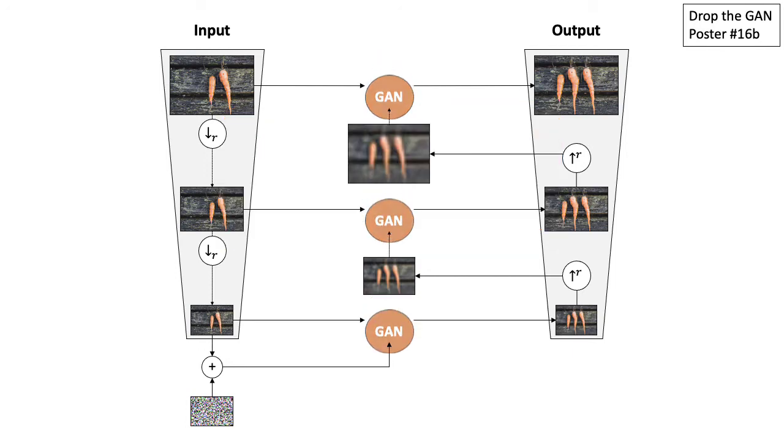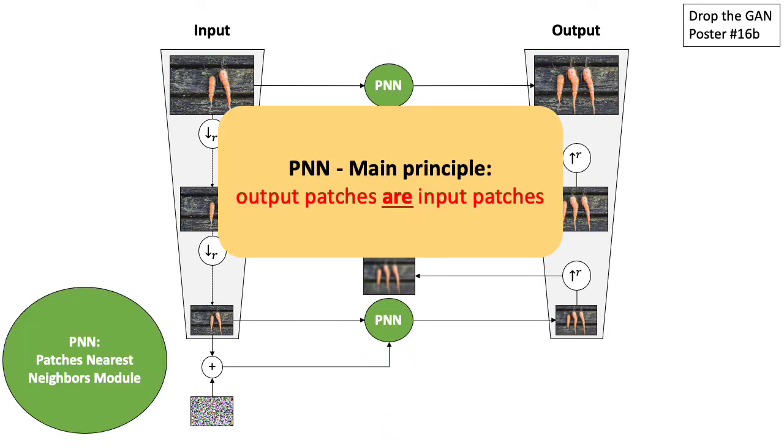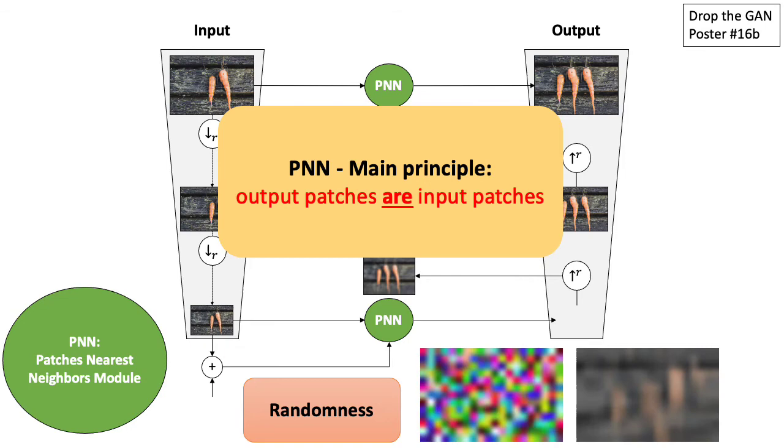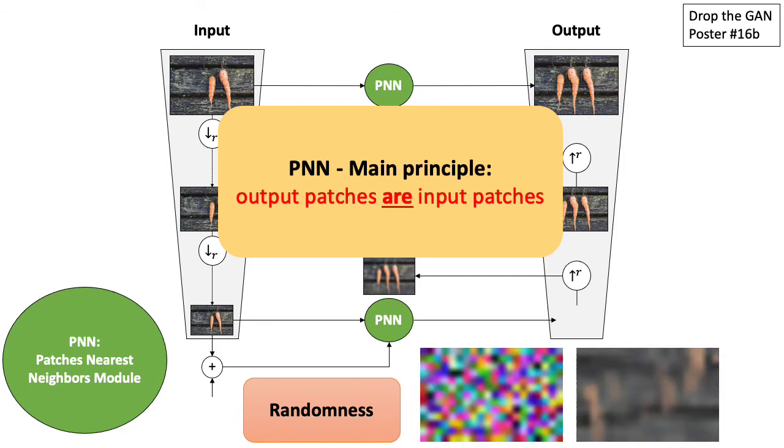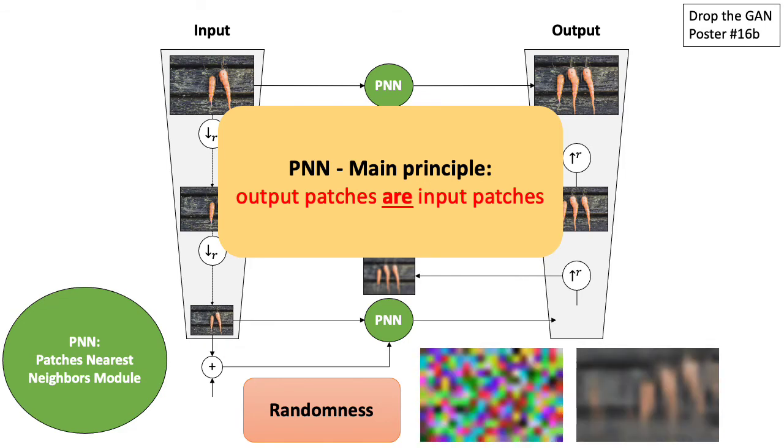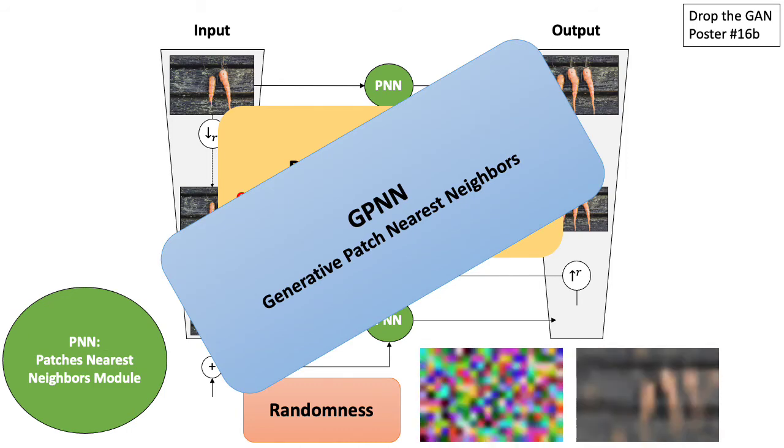But what if we drop the GAN and replace it with a simple patch nearest neighbors module? Now, the output is made of the actual input patches. Diversity is still provided by injecting noise at the coarsest level, practically making the nearest neighbors search random. We call this algorithm GPNN, Generative Patch Nearest Neighbors.